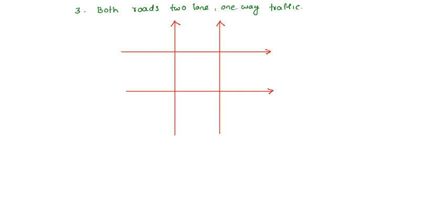Cross conflicts are four in number: one, two, three, four. Left-going traffic is only one — that is the fifth conflict. Right-going traffic is also only one — that is the sixth conflict. So total conflicts are only six numbers.